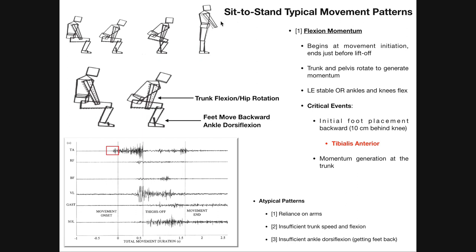Going from a sitting position to a standing position, like you see right here in this diagram, is generally called the sit-to-stand. We're going to go through the four phases of the sit-to-stand, talk about the various movement patterns, and the various muscles that are required to be active at certain times during this task.